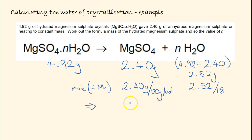We end up with 0.02 mole for MgSO4 and 0.14 mole for water.